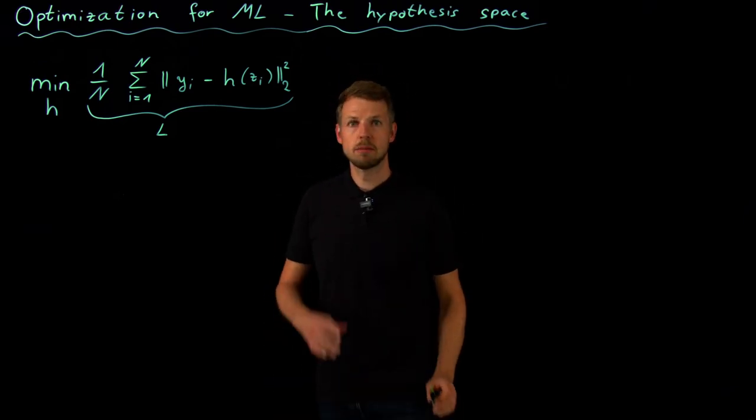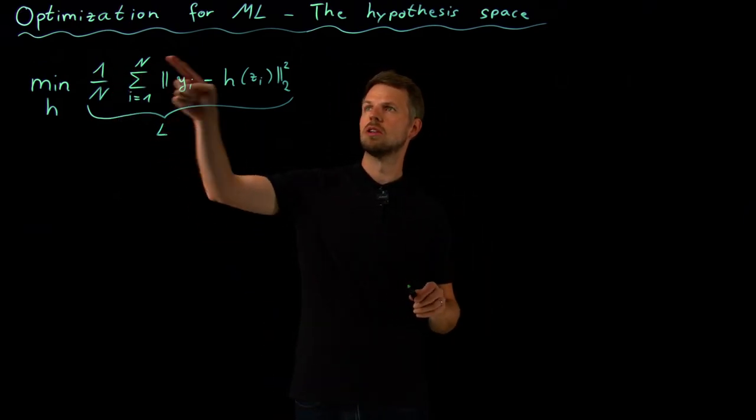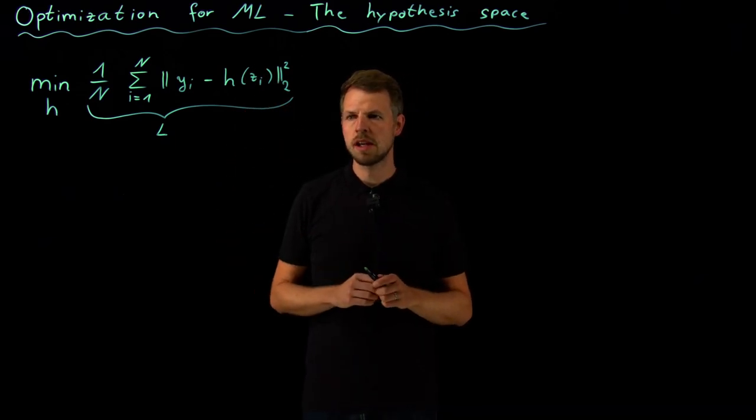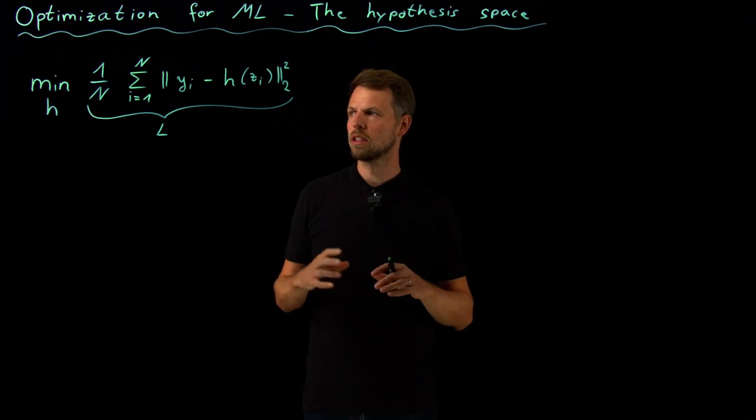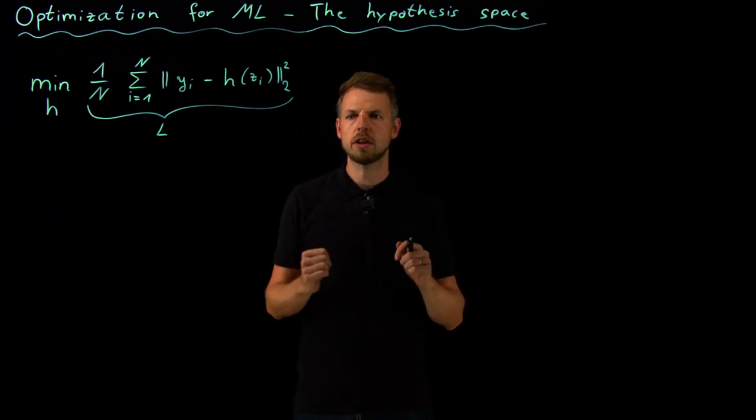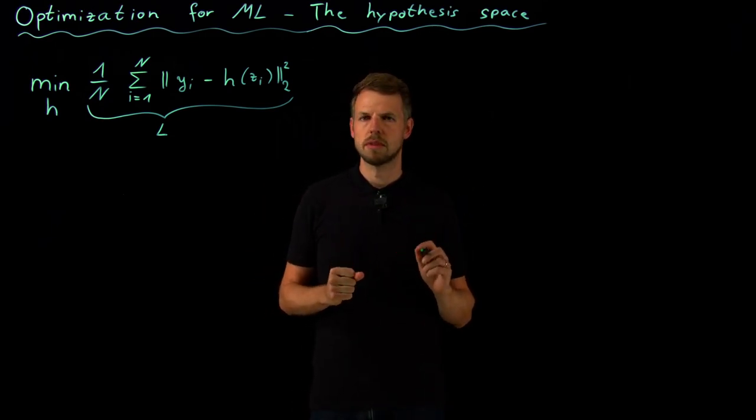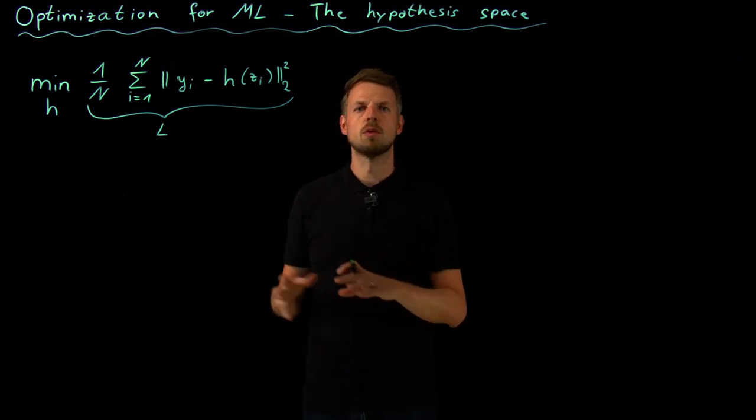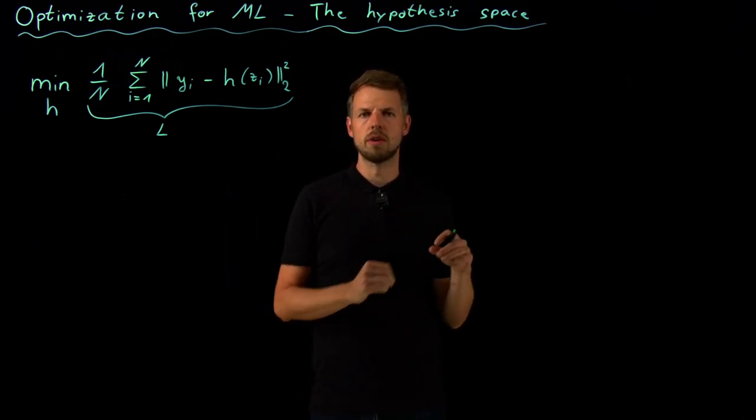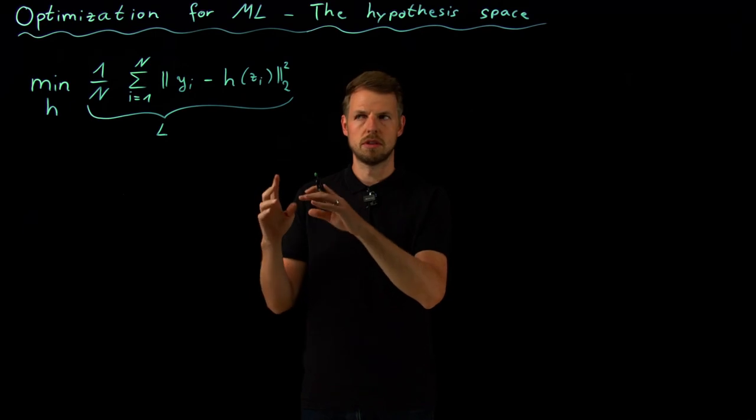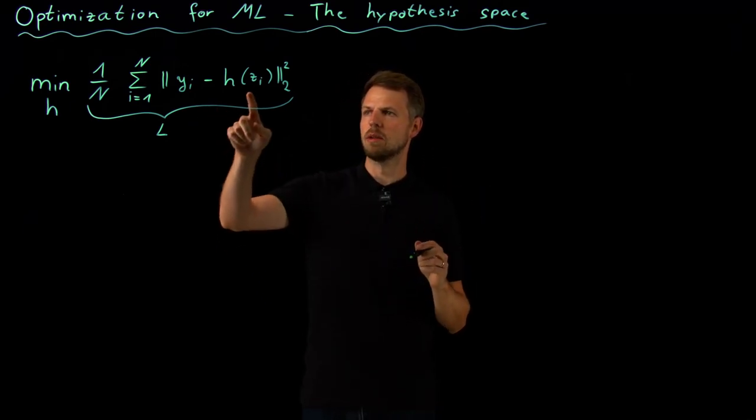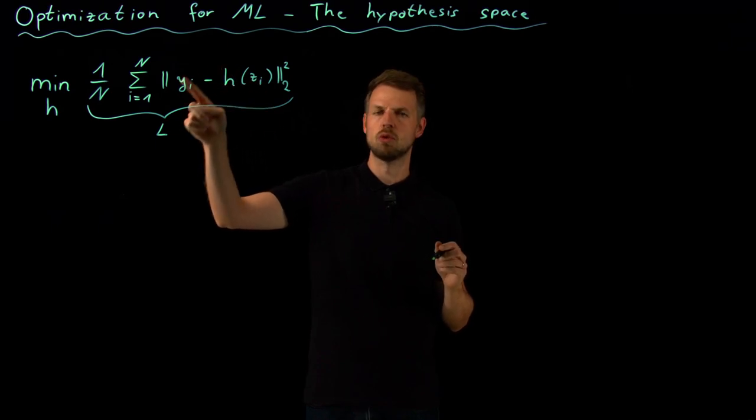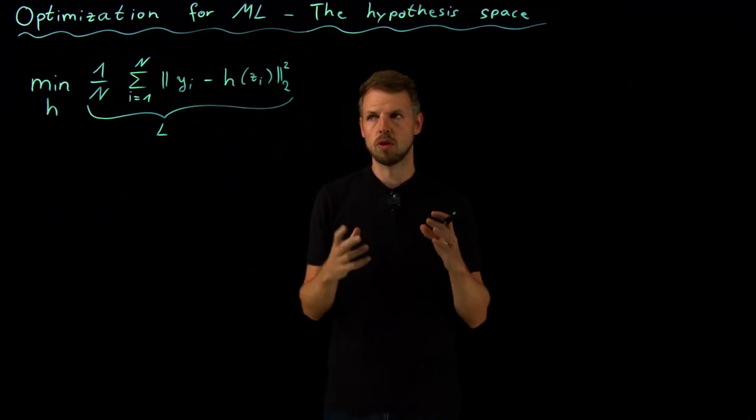Hello everyone and welcome back to part two of this section on optimization for machine learning. We started out with a short introduction and discussion that the heart of machine learning really is about function approximation and that we, given some data, want to learn an unknown relation that maps input z to output y. We had this situation f of z maps to y. This is the unknown model f that we want to learn.